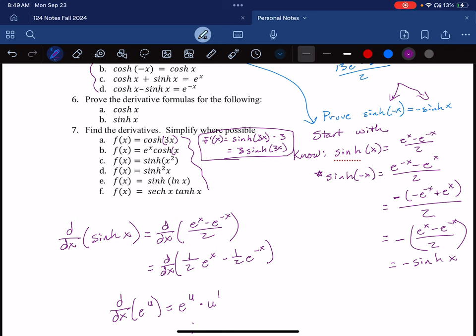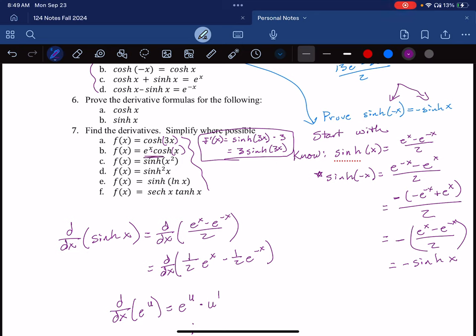So again, a lot of this is about seeing structure. Here there's a product rule. Here this is chain rule. This, again, this is the same thing as sinh of x squared. So you need to use the chain rule here. This is a chain rule.